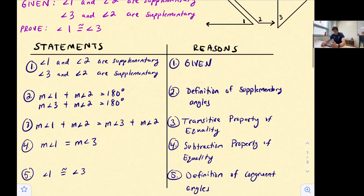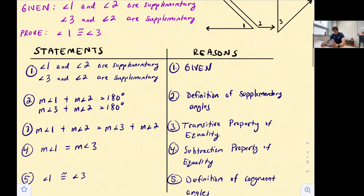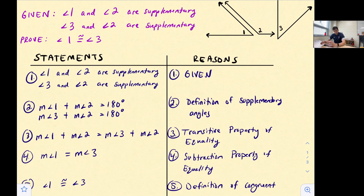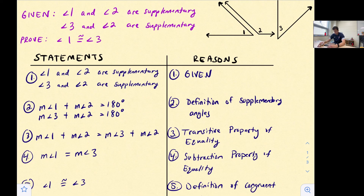Looking at our two-column proof: when you have two given statements, you can write both of those as the first statement, and the reason is 'given.' For our second statement, we use the definition of supplementary angles — they add up to 180 degrees — so the measure of angle one plus angle two equals 180, and the measure of angle three plus angle two equals 180. The reason is the definition of supplementary angles.